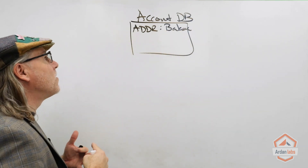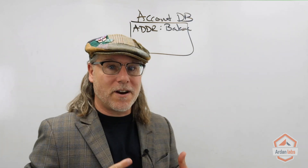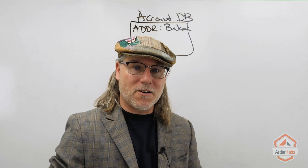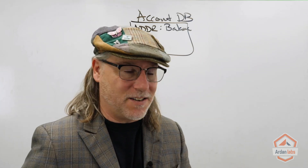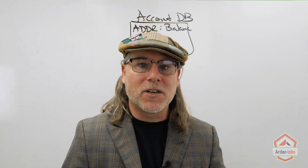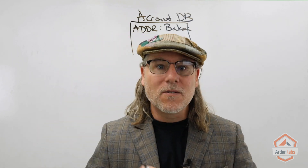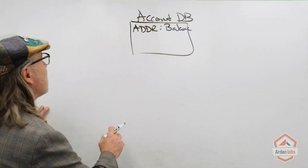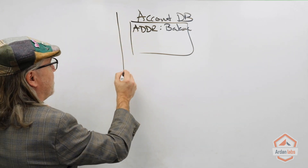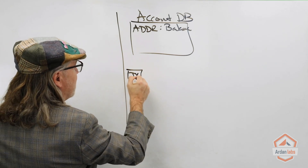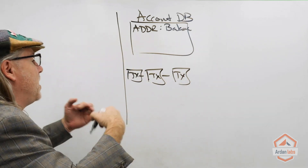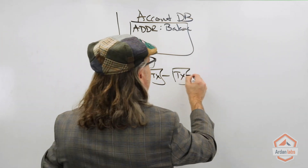That balance is going to be based on all of the transactions that occur in the system. The other part of the blockchain is going to be those transactions. This is our node — a bunch of transactions are coming into the node. There's a from and a to on each transaction, and that's going to affect the accounting.